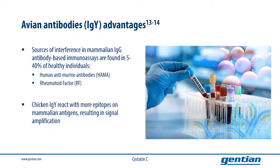The evolutionary difference between chickens and mammals has also been linked to signal amplification, as chicken IgY antibodies react with more epitopes on mammalian antigens.